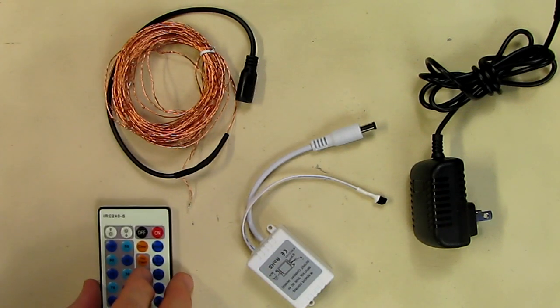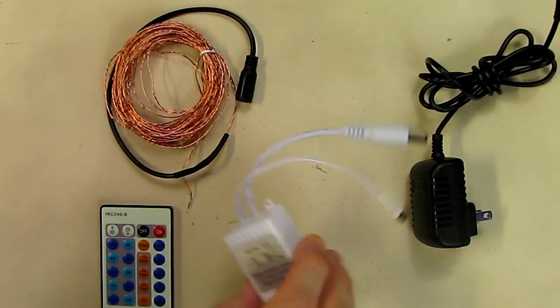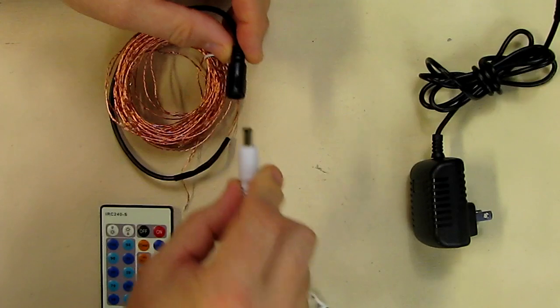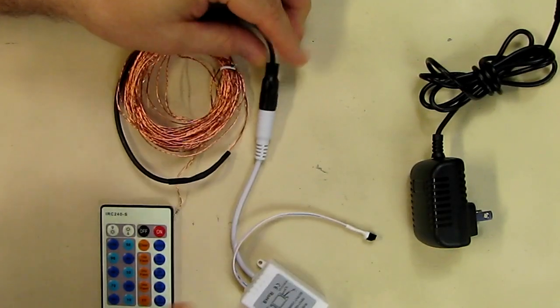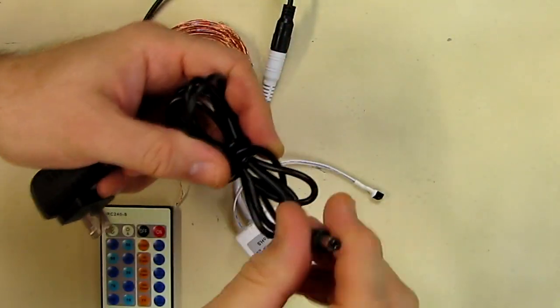It's very simple to use. The controller's output connects to the light, and the input is where you apply power. I'm going to take this included adapter which has about a three and a half foot long cable, and I'm going to plug it in.